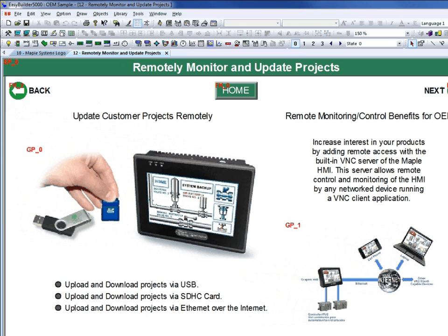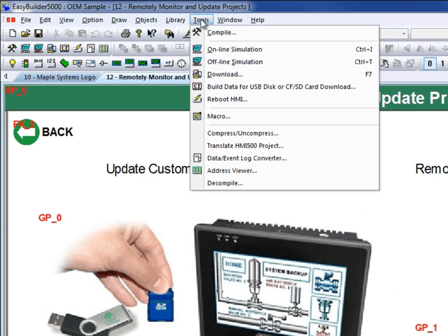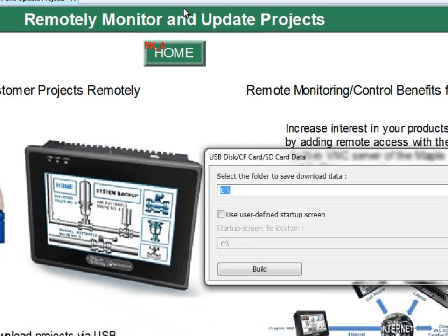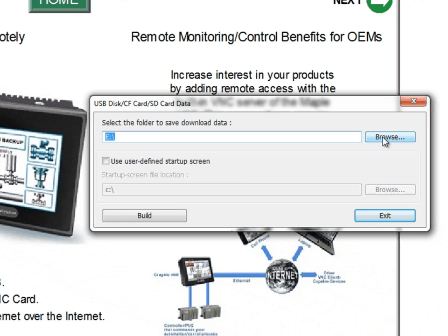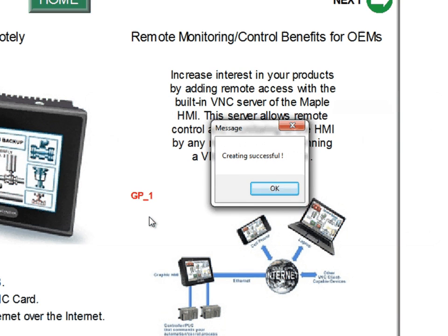One of the best features of the Maple Systems HMI is being able to update a project without having to go to the field. To do this, first you have to build data for a USB disk or SD card. Go to the Tools menu and select 'Build data for USB disk or CF SD card download.' Select the directory you want to save the data to and click the build button. This will build data that can be automatically downloaded to your HMI via USB or SD card.